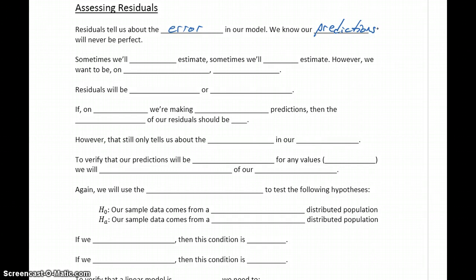Anytime we're making predictions about the future, unknown values, there's always going to be some amount of error. Sometimes we'll overestimate, other times we underestimate, but what we want is to be, on average, making accurate predictions. So if sometimes we're a little bit over, sometimes a little bit under, that should be averaging out to mean that we're more or less making those accurate predictions.